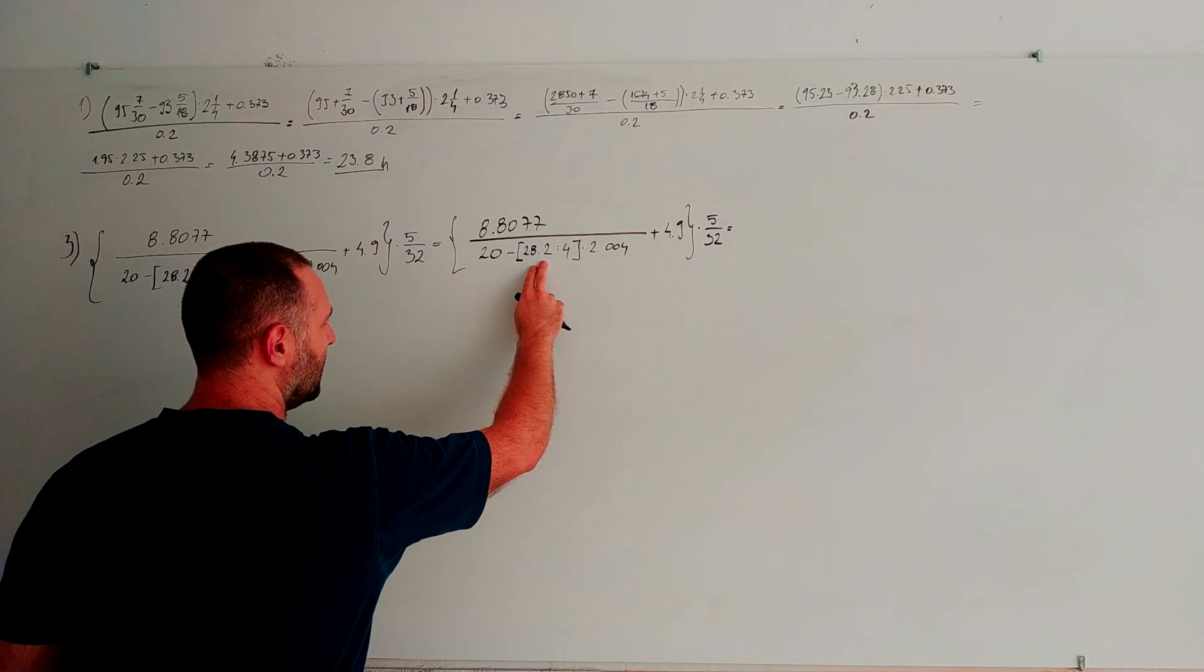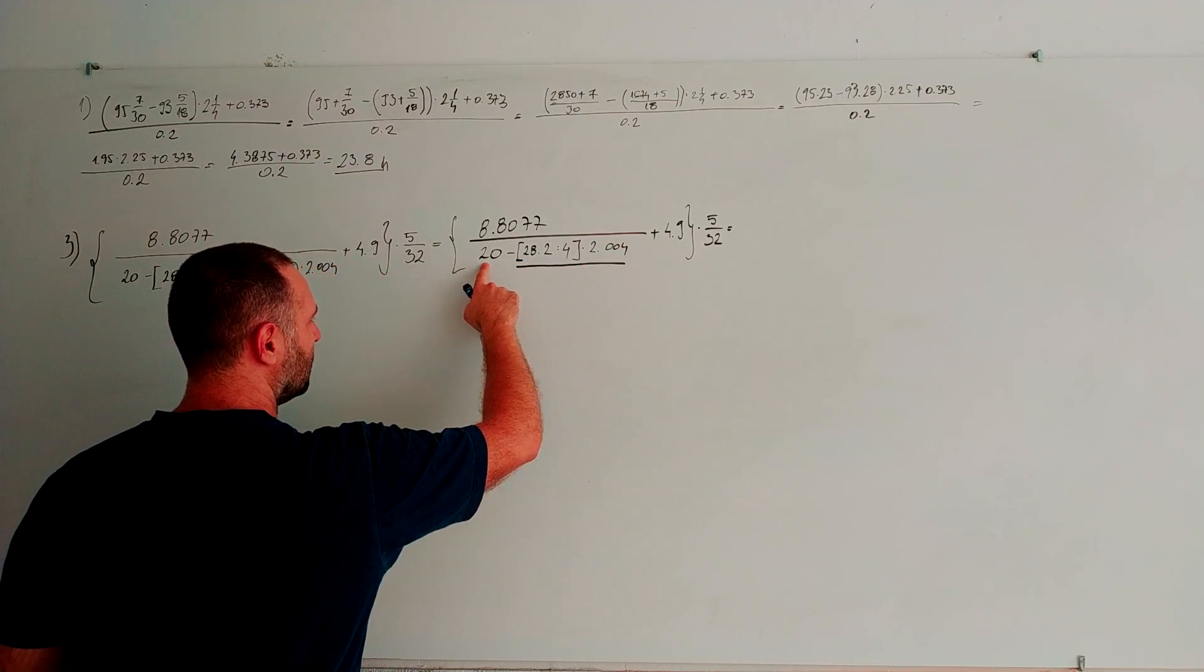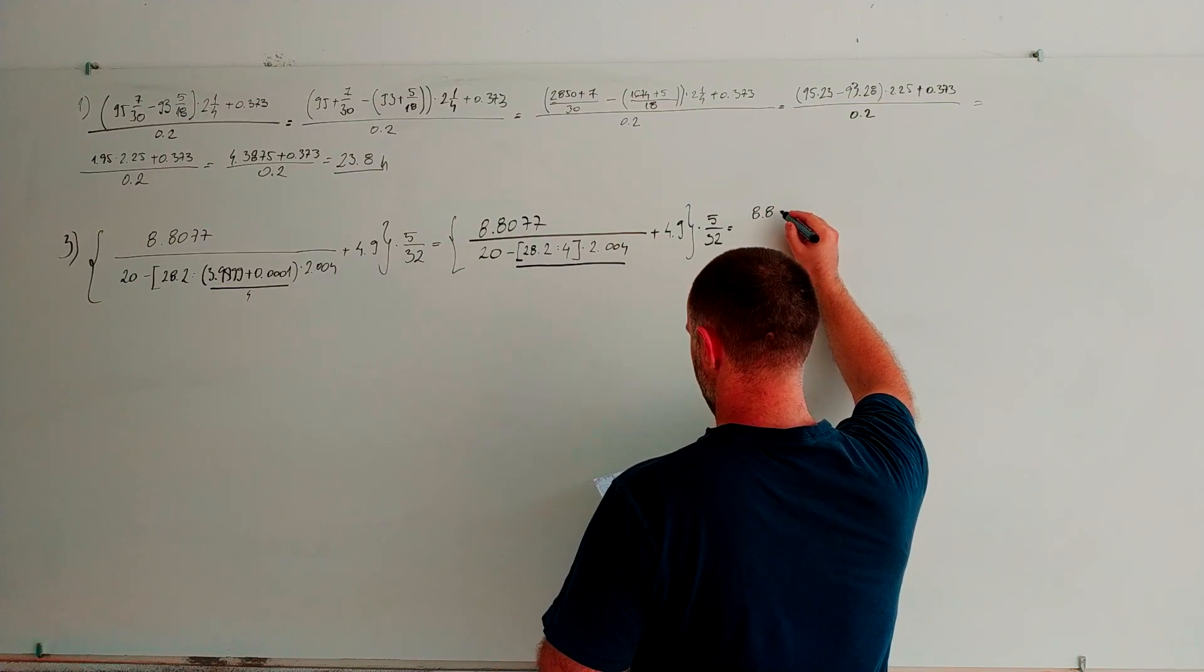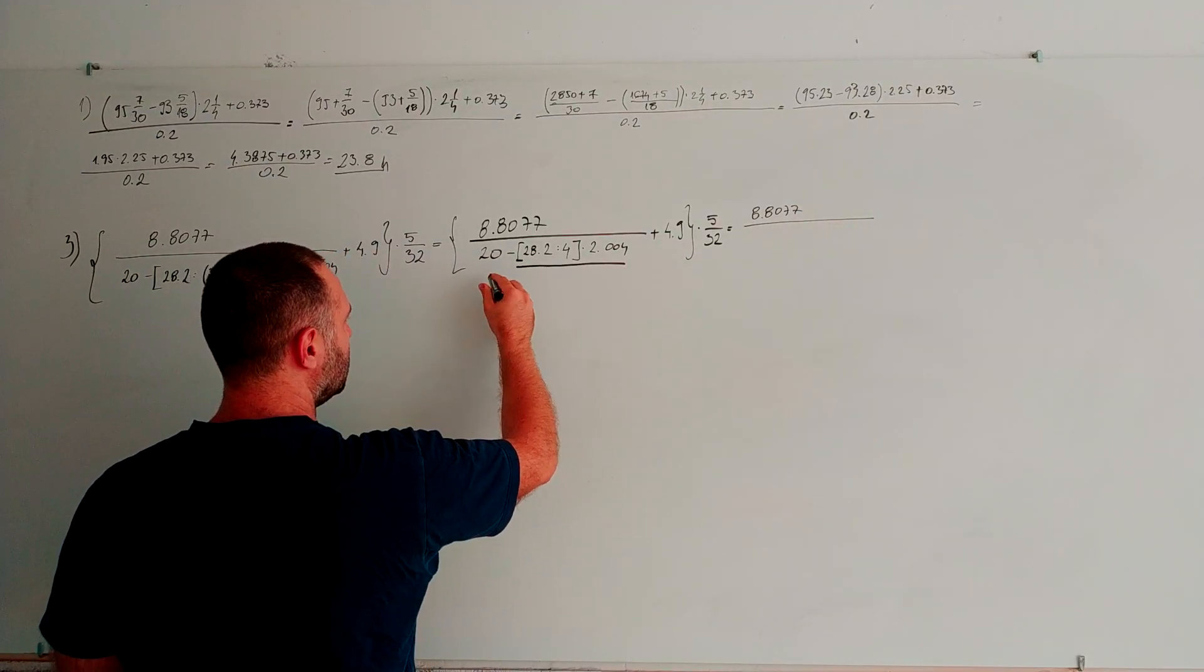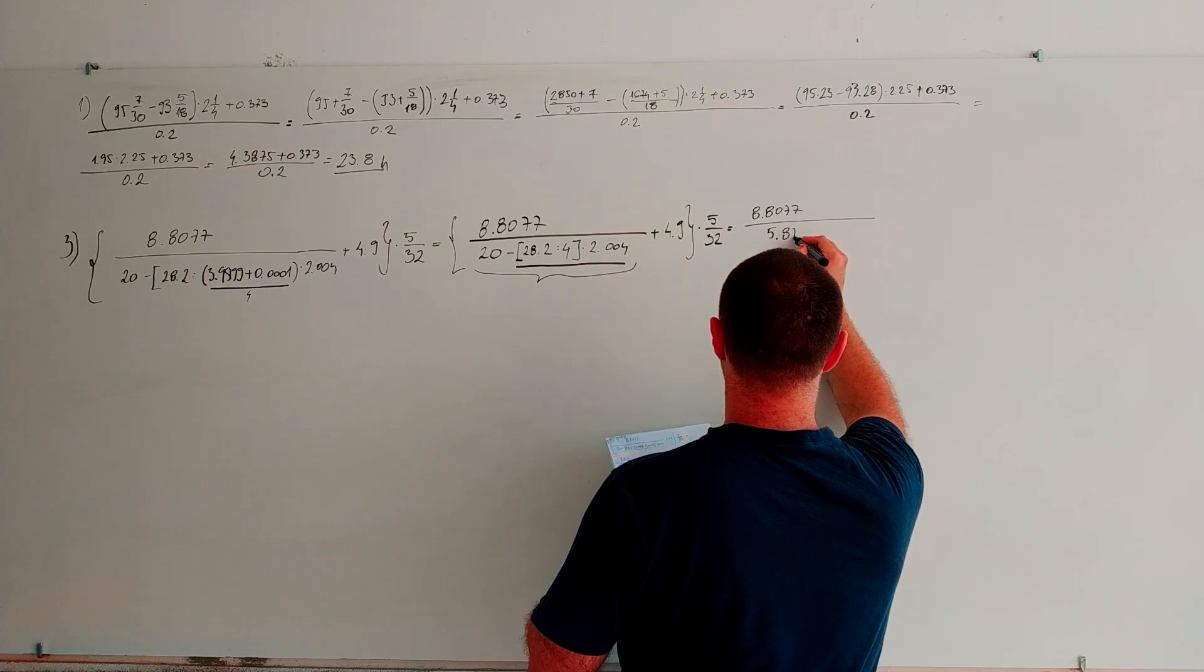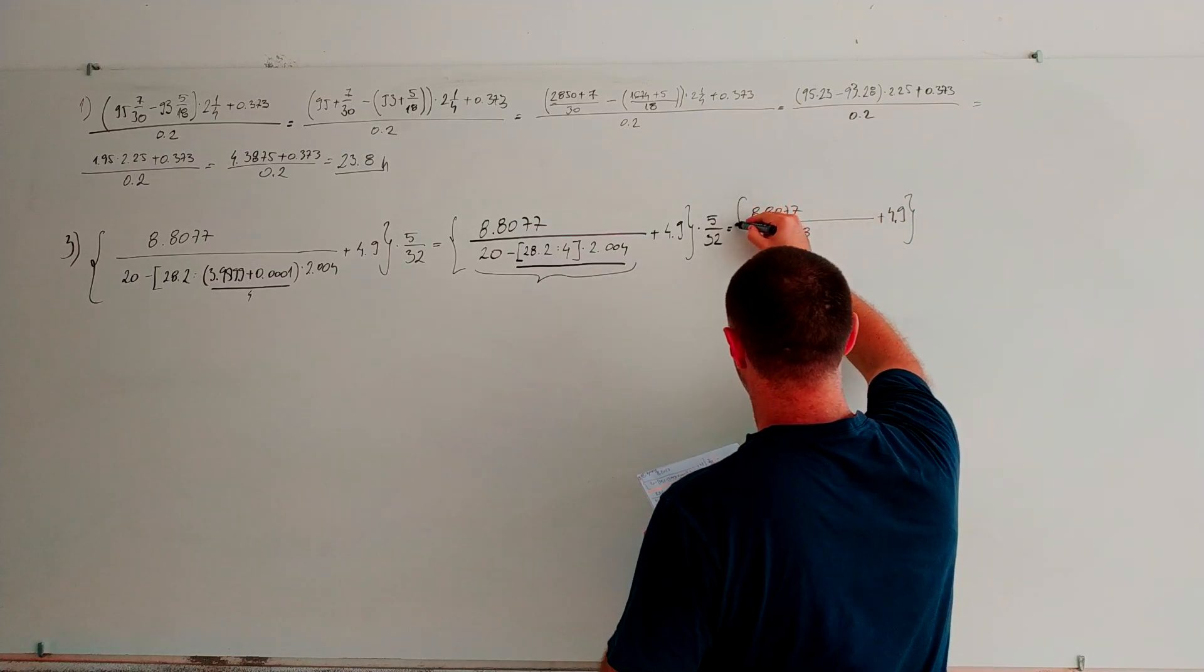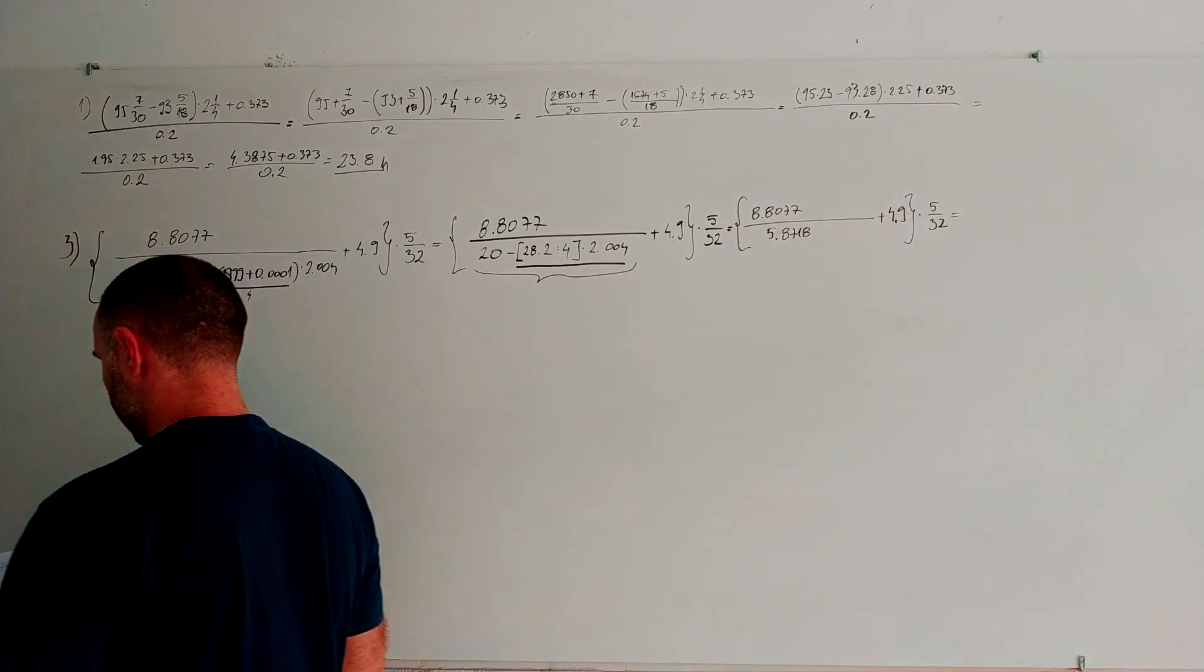What we are going to do is divide this number, multiply by this number, and all of this going to subtract from this. Here we have 8.077. All of this is 5.8718 plus 4.9, brackets, multiply by 5.32. Let's go on the left side.